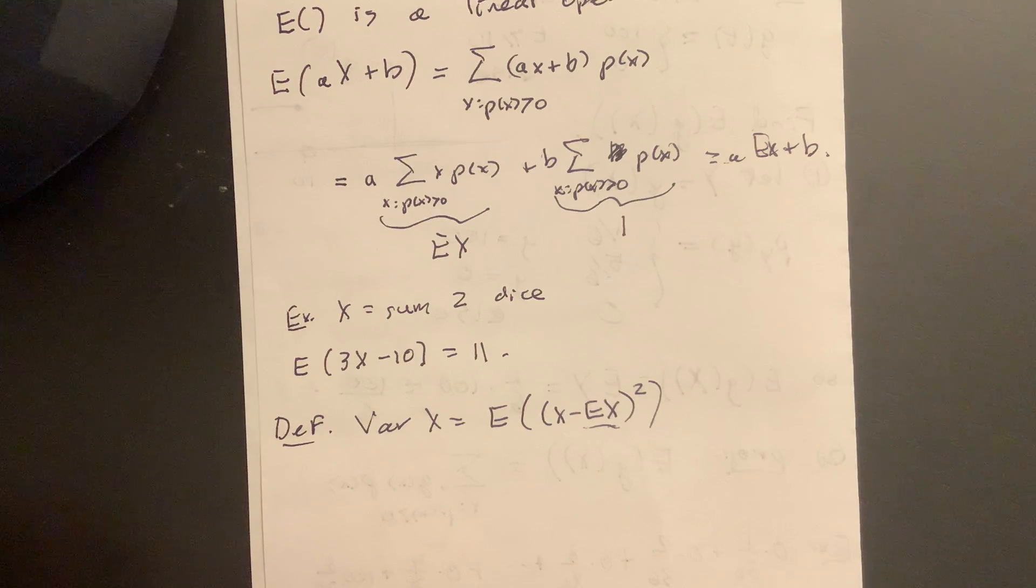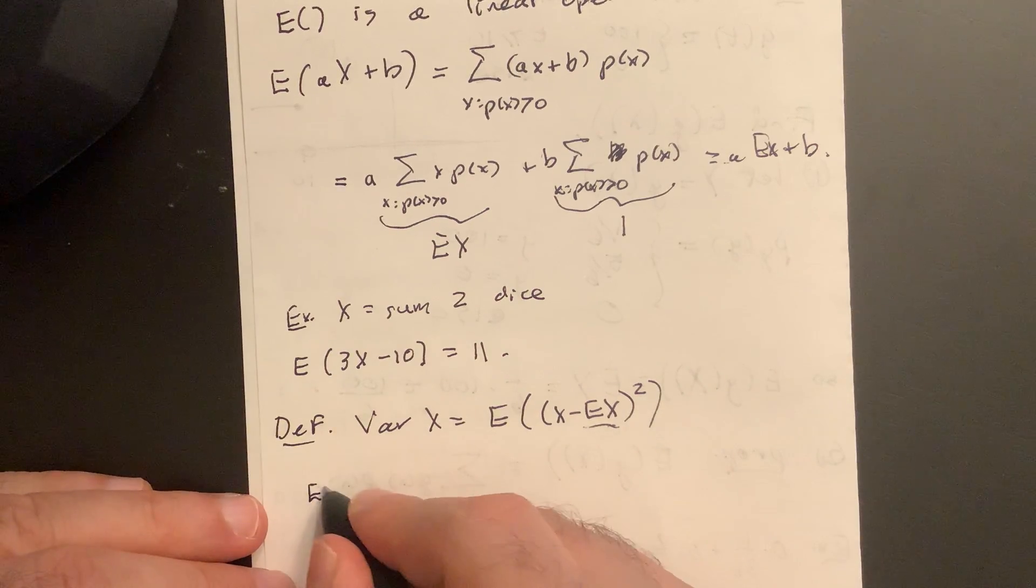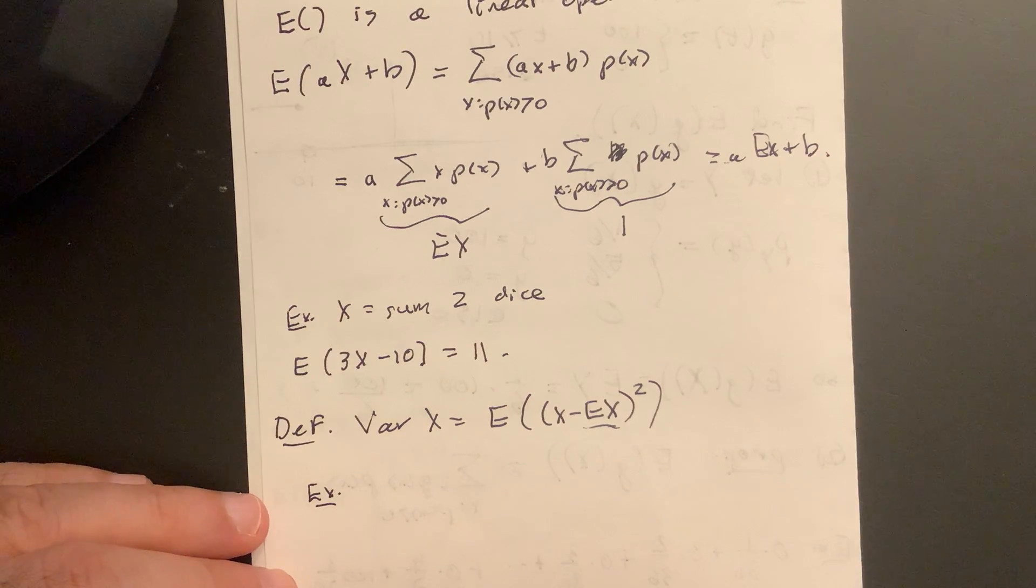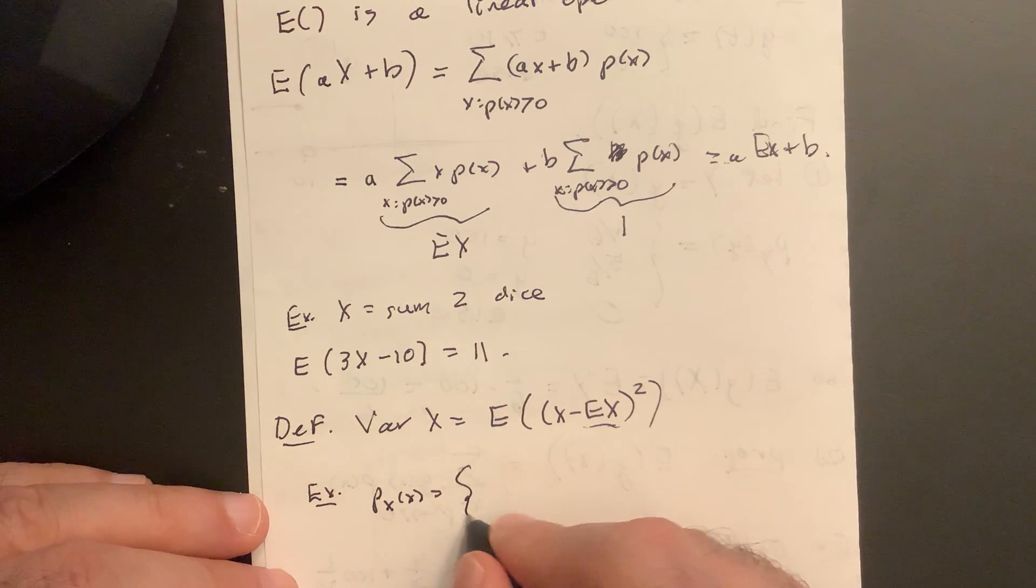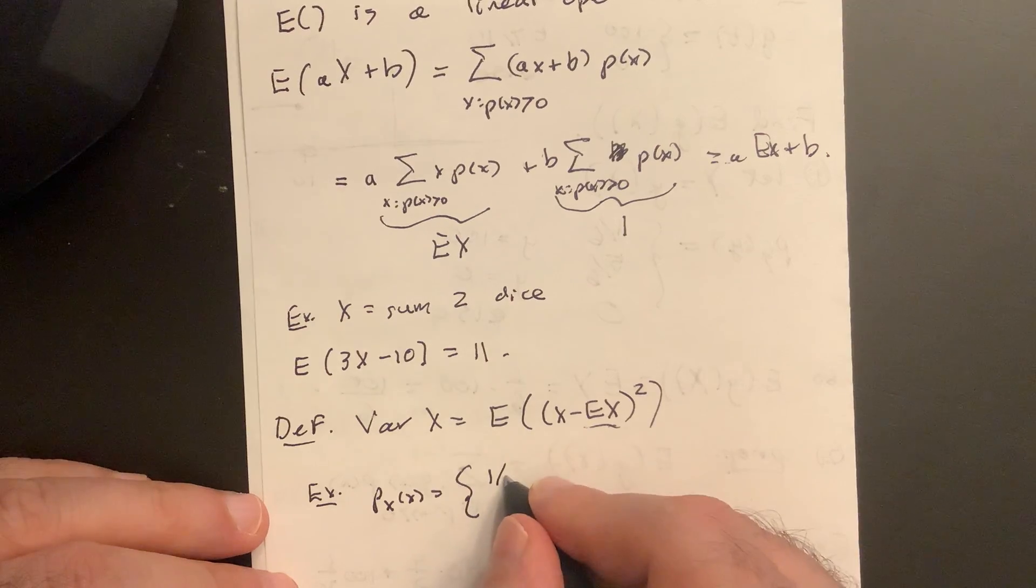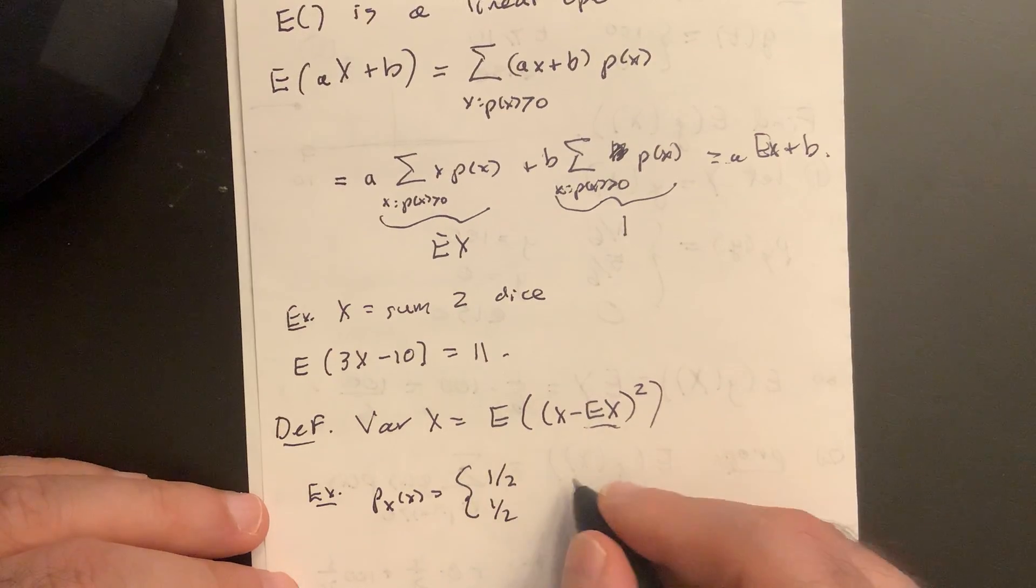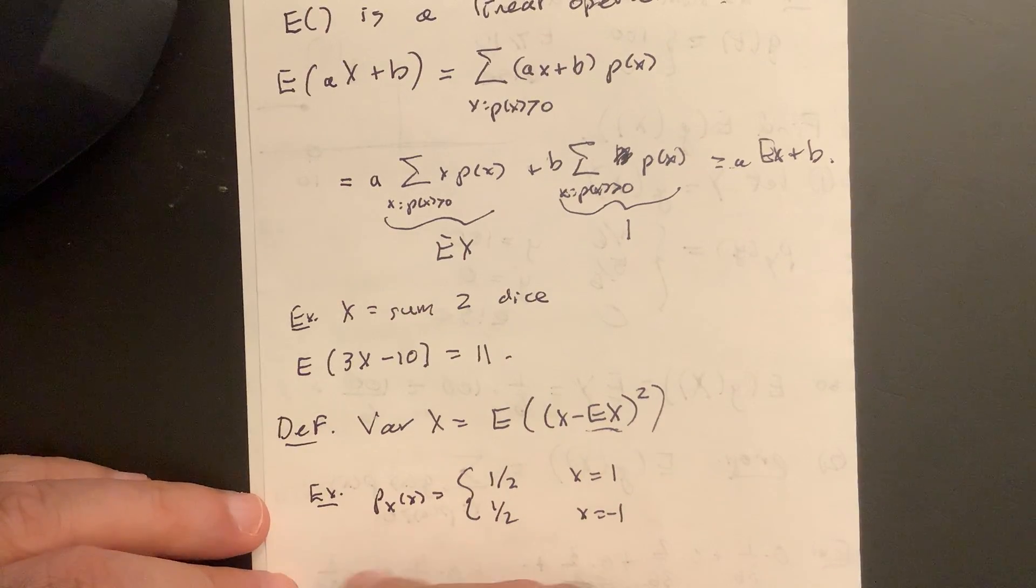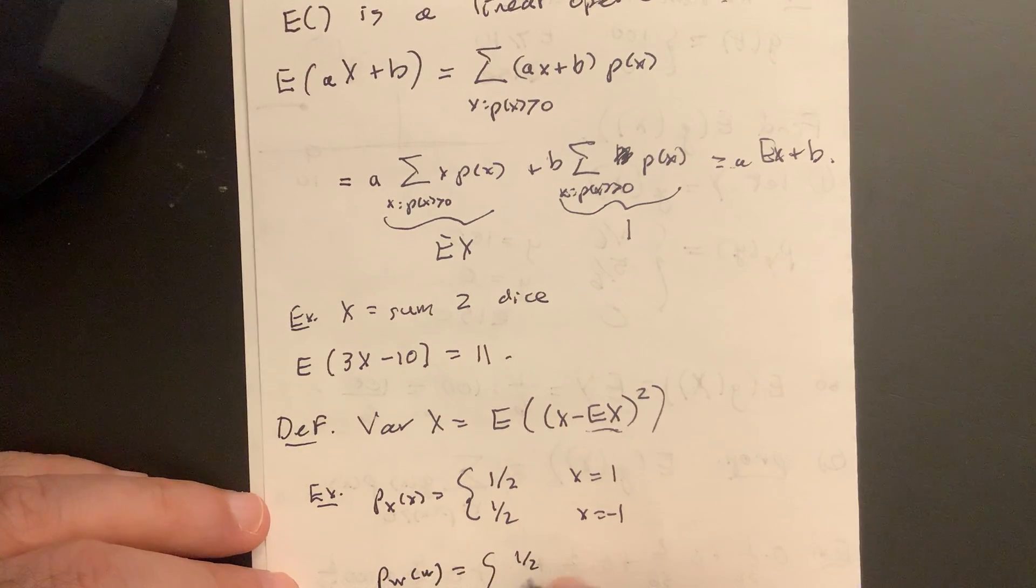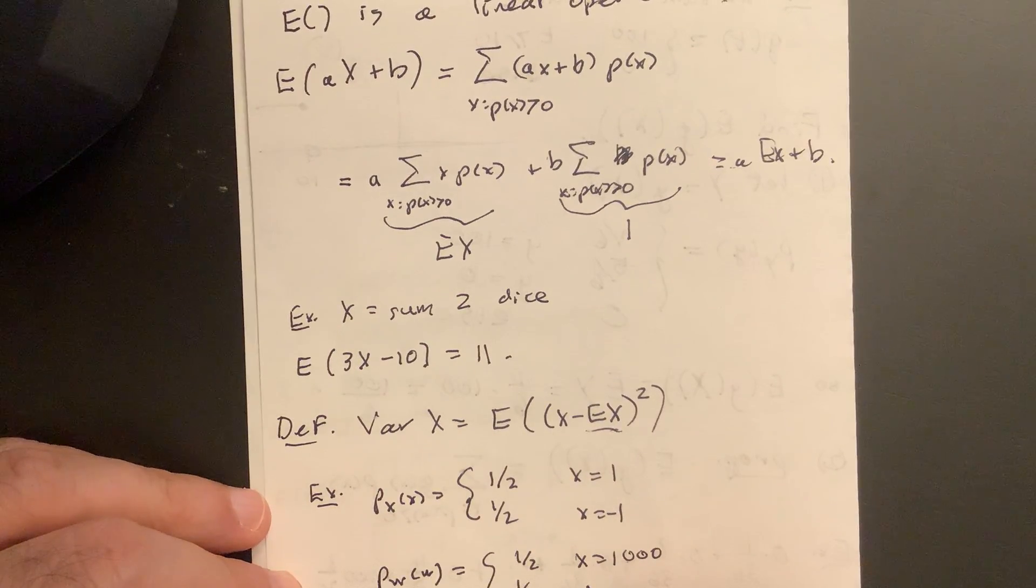Okay. So it's called sometimes the second central moment. I am taking the centering x. I'm taking the difference of x from its center, and then I'm squaring it. So that's called a moment in probability. And this is a measure, really, of how spread out x is. So consider the example. For example, suppose we have x is, say px(x) is equal to one half, one half for x equals 1, x equals -1. So E(x) is zero, and maybe pw(w), same thing, half, half, w equals 1000, and w equals -1000.